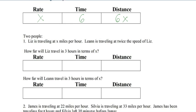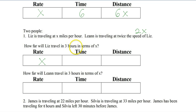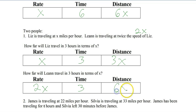Let's now try it with 2 people. Liz is traveling at x miles per hour. Leanne is traveling at twice the speed of Liz, so if Liz is traveling at x, Leanne is traveling at 2x. How far will Liz travel in 3 hours? That's 3x. Leanne is 2x, so how far will she travel? 6x. Twice the speed means twice the distance in the same amount of time.